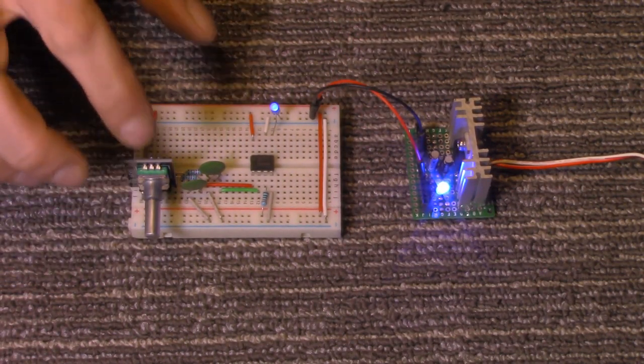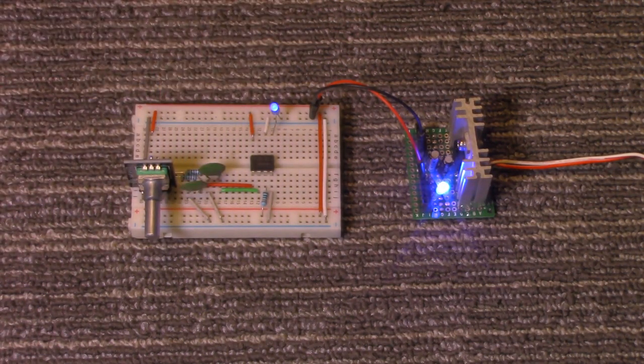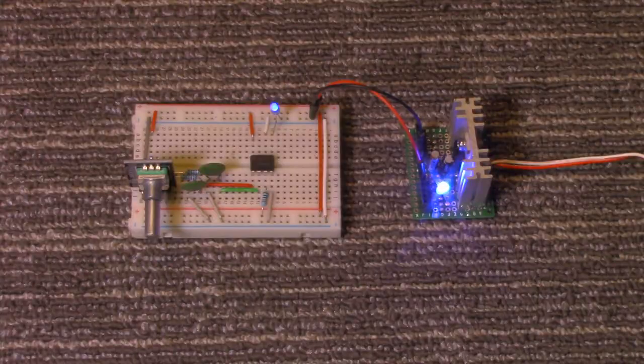So what we're doing is we're debouncing this rotary encoder by using these capacitors here. So let's go over to the schematic for this and I'll show you how this is put together.